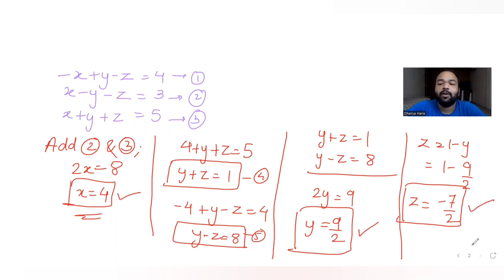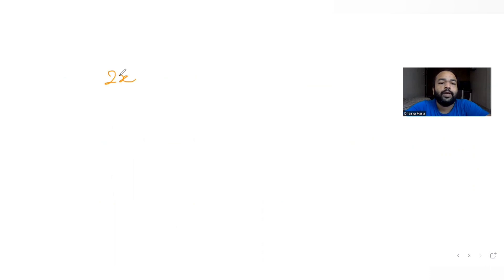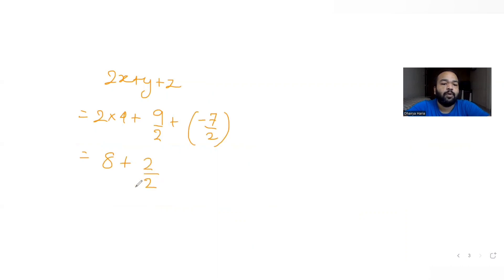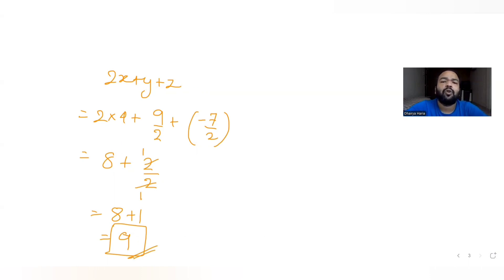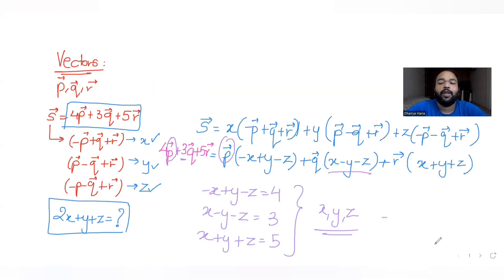Now I have all values: x=4, y=9/2, z=−7/2. Finding the required expression 2x+y+z: 2×4 + 9/2 + (−7/2) = 8 + 9/2 − 7/2 = 8 + 2/2 = 8 + 1 = 9. So the answer is 9. I hope you have understood how to solve this type of question on vectors where components along two different sets of basis directions are given.